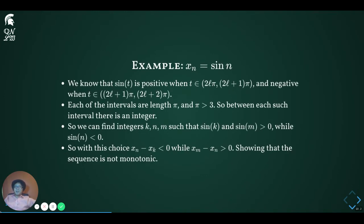To show how this can be used, let's do a slightly complicated example. The sequence is x sub n equals sine of n. For this sequence, notice that the function sine of t is positive when t is between an even multiple of pi and the next larger odd multiple of pi. Since each of these intervals are of length pi, you can always find an integer in each interval. This means that we can find k, n, and m such that sine of k is positive, sine of n is negative, and sine of m is positive. From this, we find x sub n minus x sub k is negative, and x sub m minus x sub n is positive.